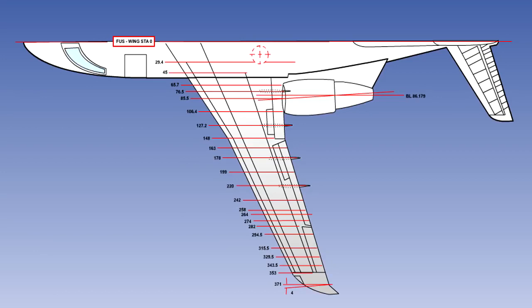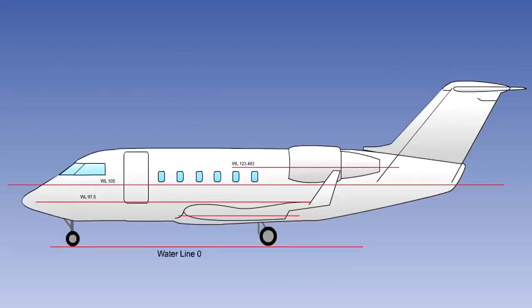Wing station numbers are measured in inches left or right of the aircraft centre line. Vertical position is identified from the horizontal datum. These positions are known as water lines or buttock lines and are measured in inches from the datum. Plus is used for locations above and minus for locations below the datum. In this example, the datum is at the bottom of the extended landing gear.